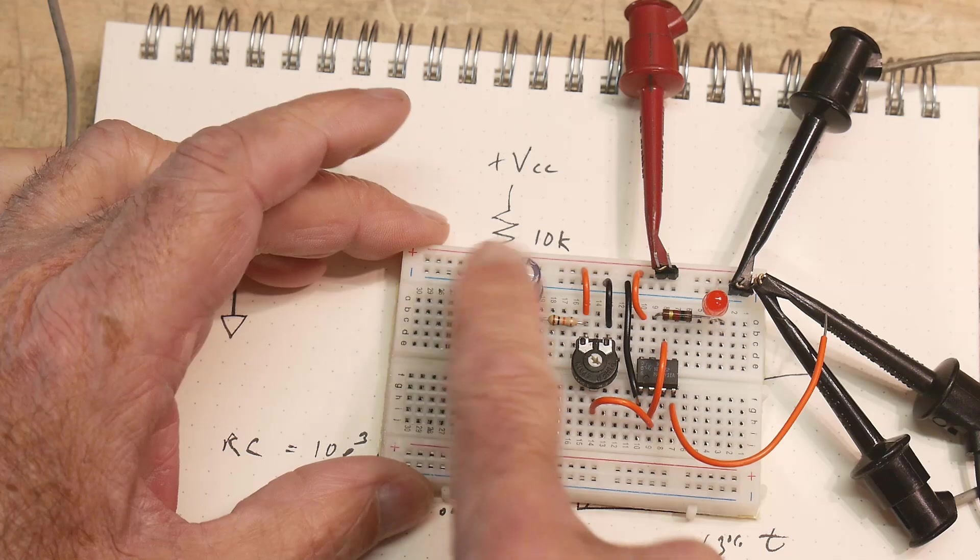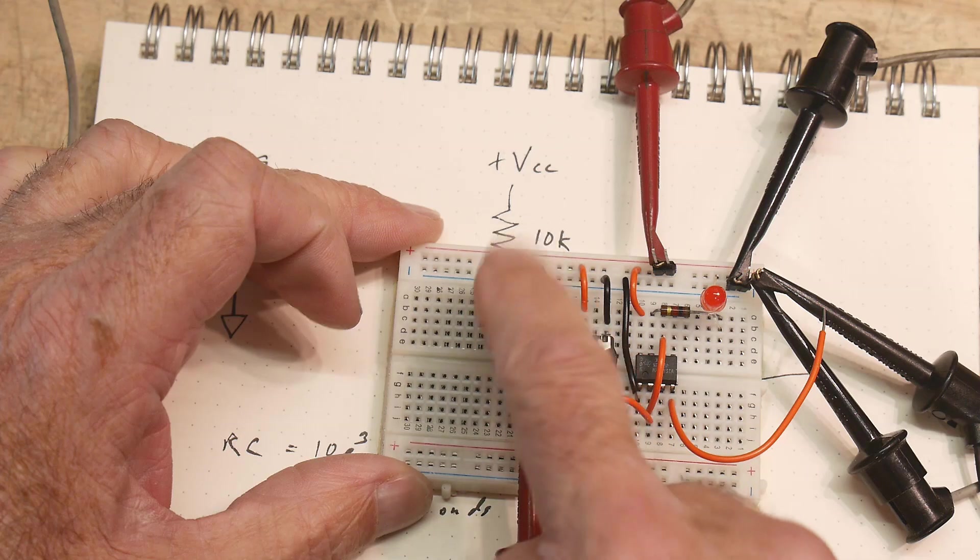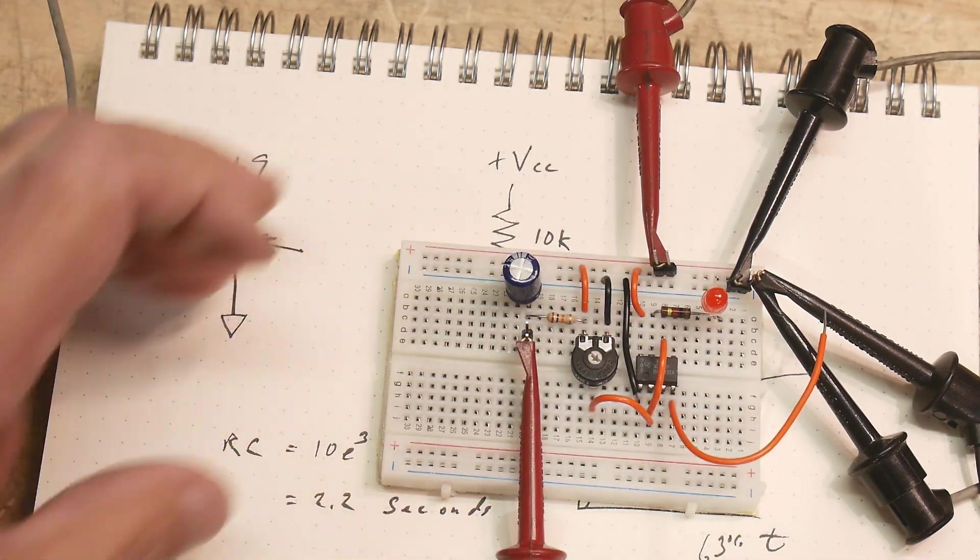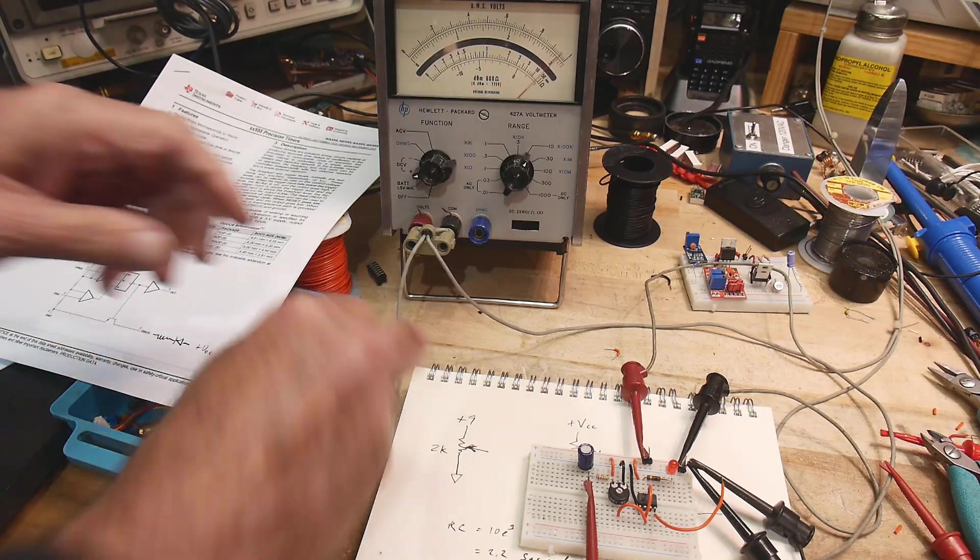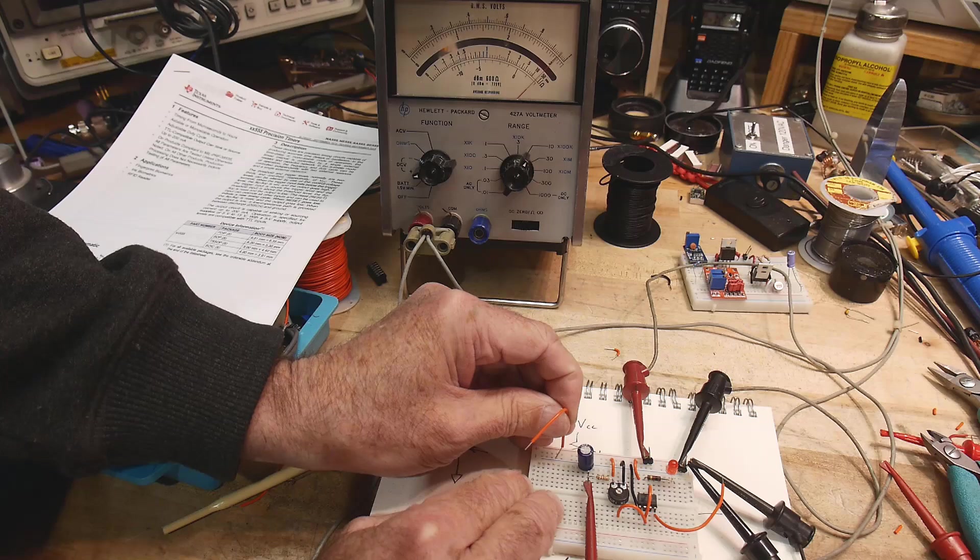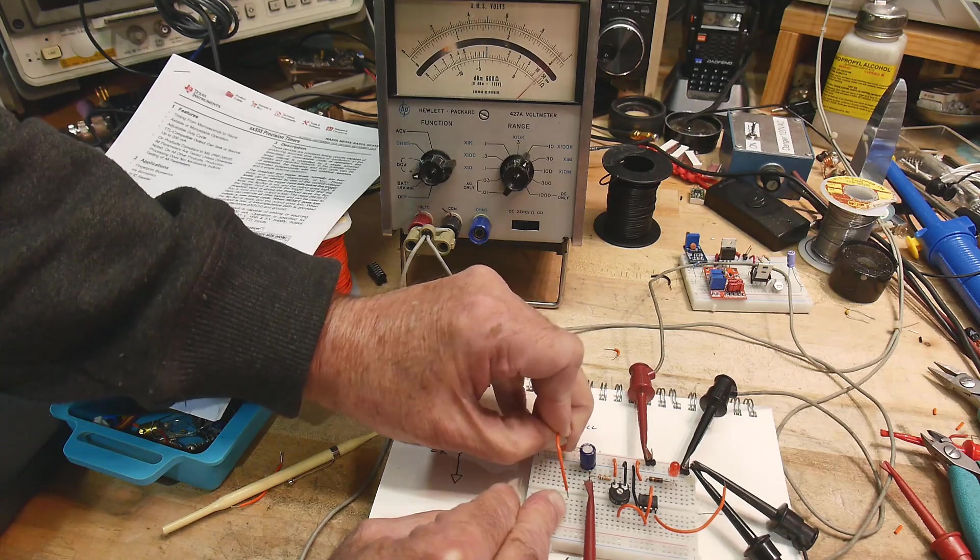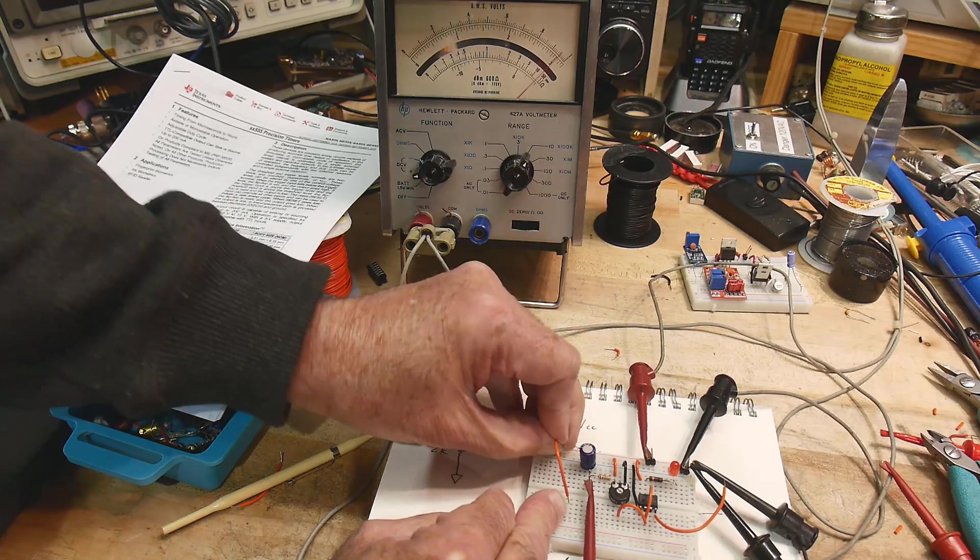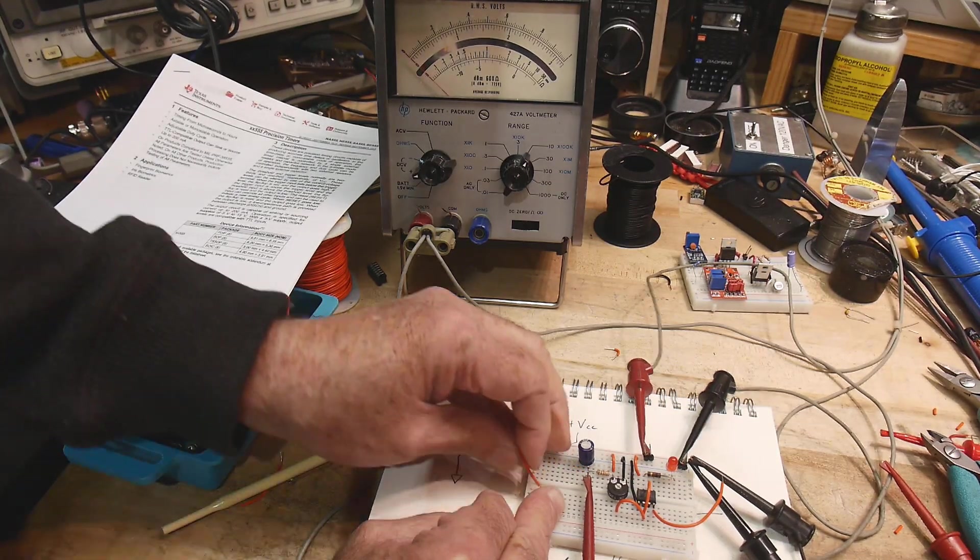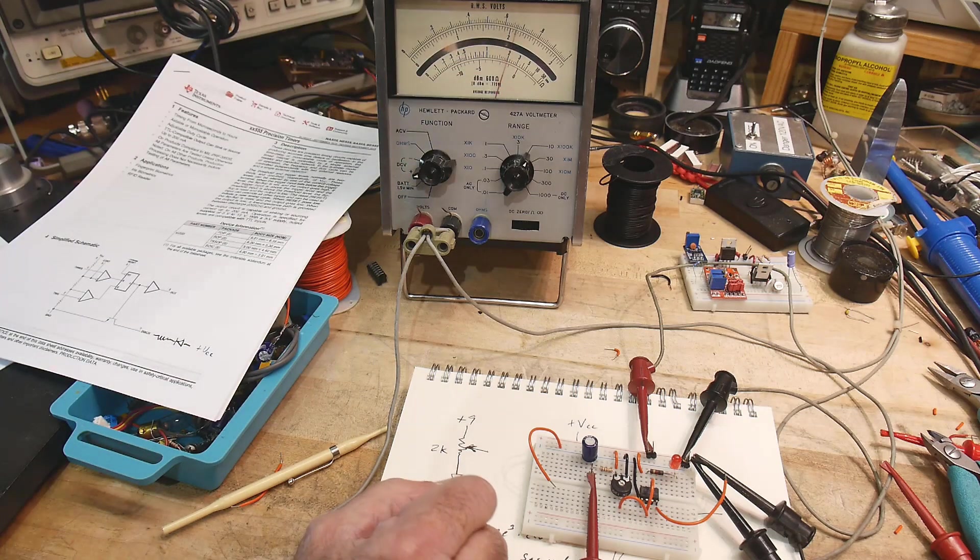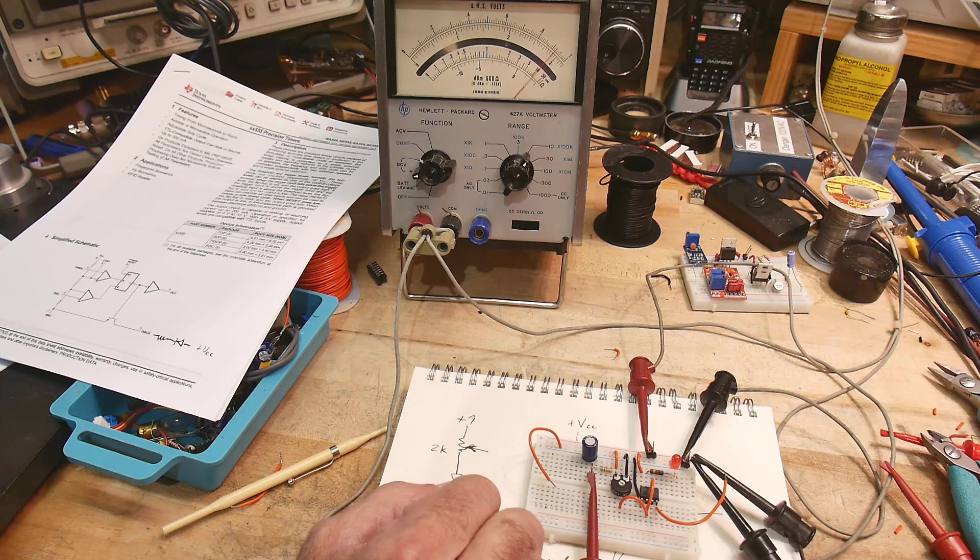So here's our 220 microfarad to ground, and here's our 10K to plus VCC, and we're going to measure the voltage on the capacitor. And the voltage on the capacitor is 9 volts, as expected. So I'm going to come in with a wire, I'm going to hook it up to ground, and I'm going to short that capacitor to ground, and it will go to zero, and then when I let go, it'll start to charge.